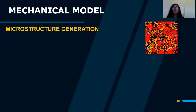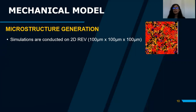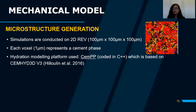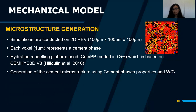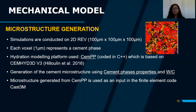The mechanical model begins with microstructure generation. On this generated microstructure, we apply the damage model and the creep model. The simulations are conducted on 2D representative volumes of 100 micrometers. Each voxel is one micrometer and represents one cement phase. The hydration model platform used is CEMPP, coded in C++, based on CEMHYD3D and defined in the works of Julien in 2016. The generated microstructure is then used as input for the finite element code CASTEM.